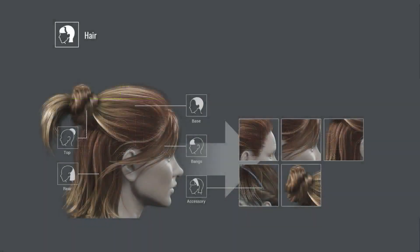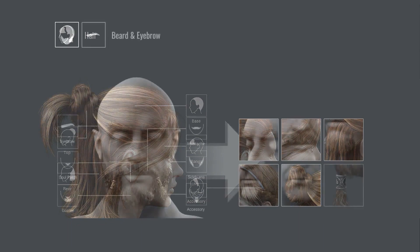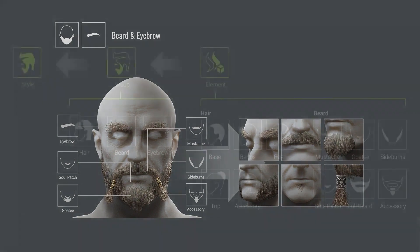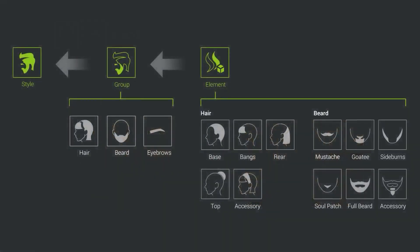First there are individual elements, which are smaller hair components such as the bangs and rear areas or parts of a beard like the mustache or the soul patch. All of these elements can be saved into three category groups: hair, beard, or eyebrows. From there you can combine these groups to create overall styles that can easily be applied to your character with a single click.